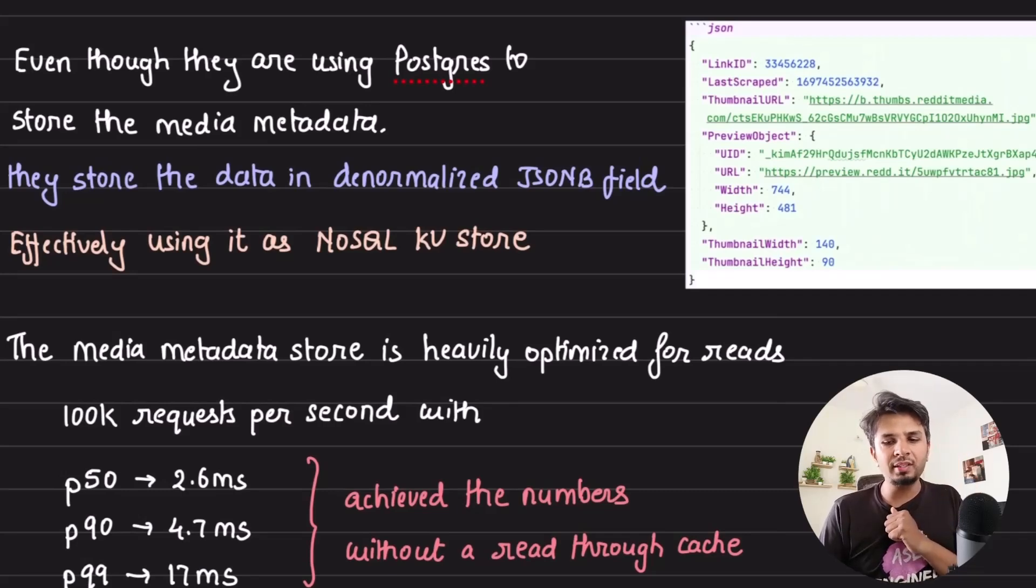To talk about the scale they handle with this, the new metadata store they built was heavily optimized for reads. They were serving 100,000 requests per second with P50 latency to be 2.5 milliseconds, P90 latency to be 4.7 milliseconds, and P99 to be 17 milliseconds. And they achieved these numbers without having a cache, a read-through cache. Pretty impressive.